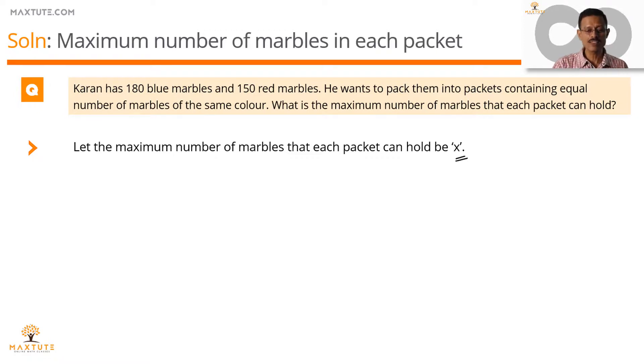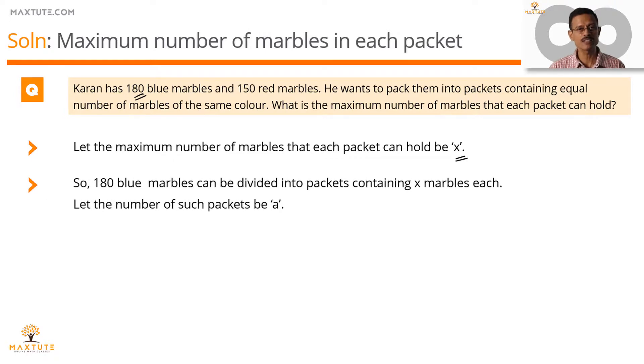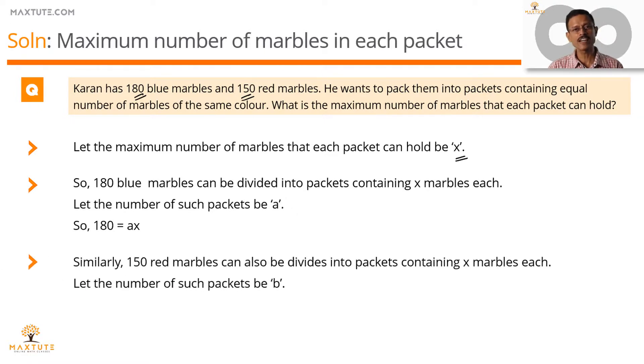Therefore, he's going to break this 180 blue marbles into packets containing x marbles each. Let's say he's able to make a such packets. So 180 is going to be equal to a times x. He'll be able to do the same thing with 150 red marbles. He's going to break this 150 red marbles into packets containing x marbles each. Let's say he manages to get b packets out of it. So this 150 is going to be equal to b into x.